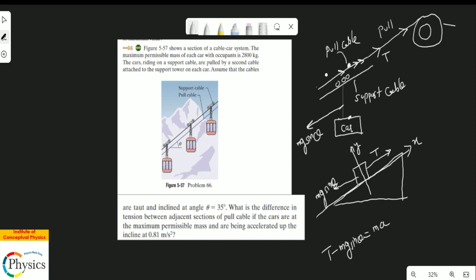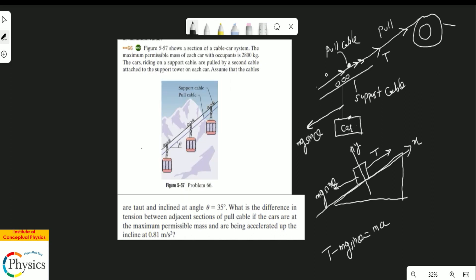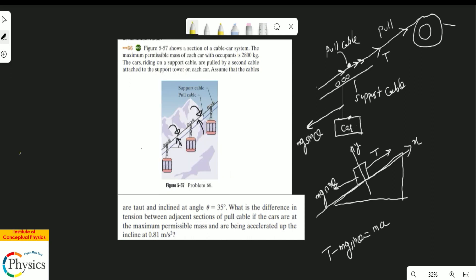If you notice, this car is going to have some weight in this direction, which is the weight of the passengers (mg sin θ), and this is where the pull is coming—the tension. Now, the only difference is the question asks: what is the difference between the tension in the various sections of the pull cable?